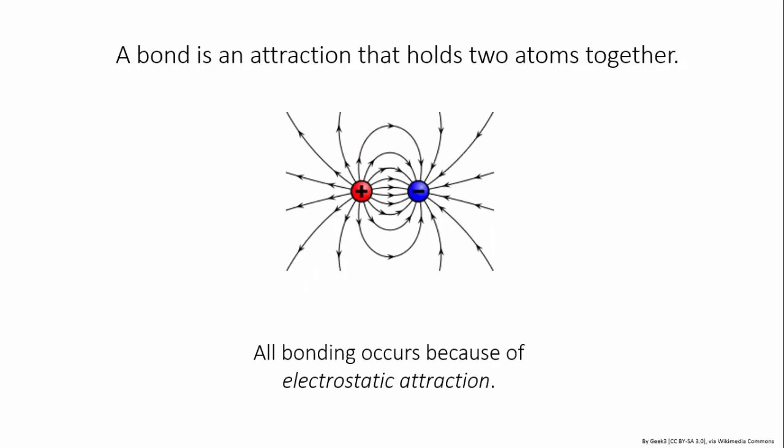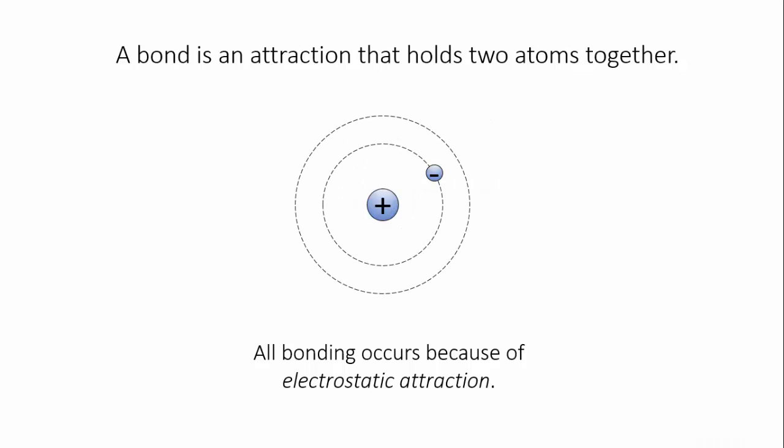All bonds form because of electrostatic attraction. Electrostatic attraction is the force that pulls two oppositely charged particles together. It is electrostatic attraction that keeps negatively charged electrons close to the positively charged nucleus of an atom.